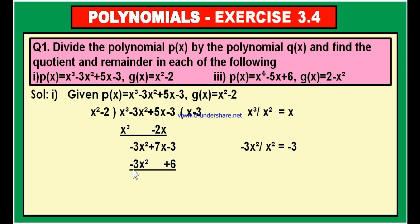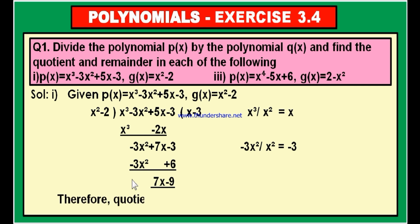While subtracting, minus 3X square becomes plus 3X square, and these cancel. There is no X term, so 7X minus 0 is 7X. And minus 3 minus 6 is minus 9. We get 7X minus 9. We cannot divide further because the degree of the remainder is 1, whereas the degree of the divisor is 2. Therefore, quotient is equal to X minus 3, and the remainder is 7X minus 9.